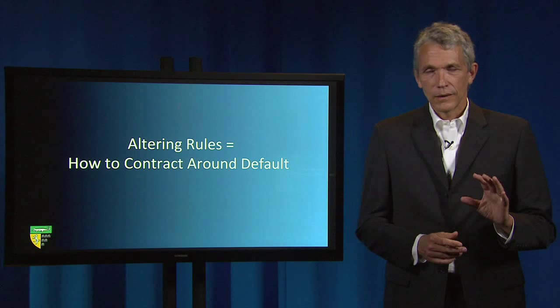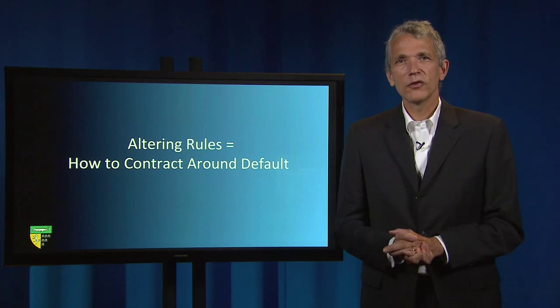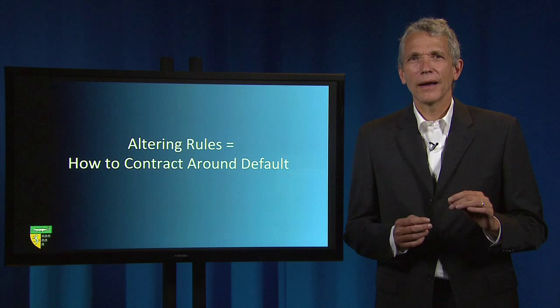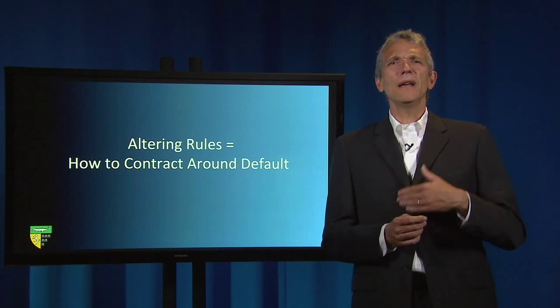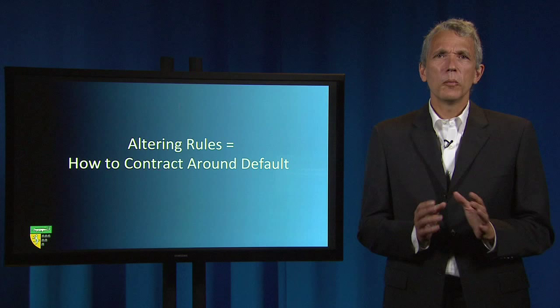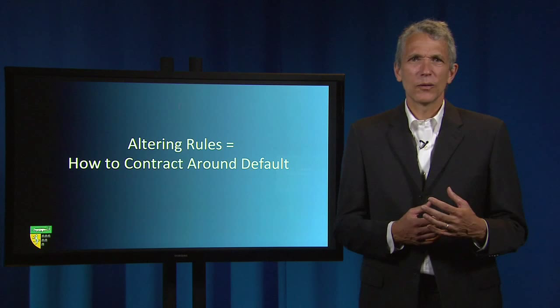The UCC — the Uniform Commercial Code — section 2-206(1)(a), for example, establishes the default that an offer invites acceptance "in any manner and by any medium reasonable in the circumstances." The same section provides that the default will obtain "unless otherwise unambiguously indicated" by the offeror. The reasonable medium rule is the default, and the unambiguously indicated requirement provides the altering rule.